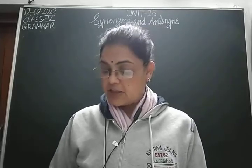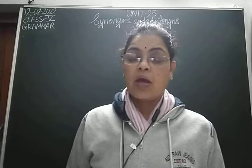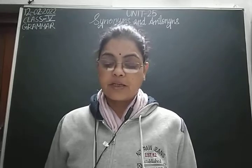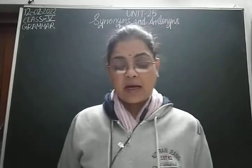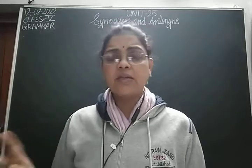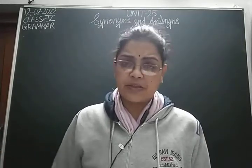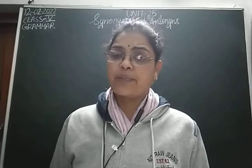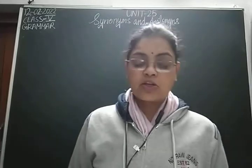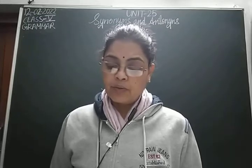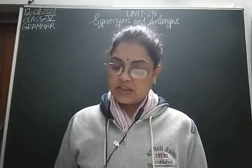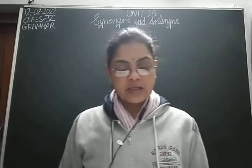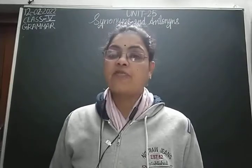Now let's read the antonyms given in the green box on page number 109. Antonyms are words with opposite meanings. The first word is 'absence' and the antonym is 'presence' - absence, presence, presence, absence. The second word is 'accept' and the antonym is 'reject.' The third word is 'begin' and the antonym is 'finish.' The fourth word is 'borrow' and the antonym is 'lend.' The fifth word is 'create' and the antonym is 'destroy.' The sixth word is 'cruel' and the antonym is 'kind.' The seventh word is 'entrance' and the antonym is 'exit.'